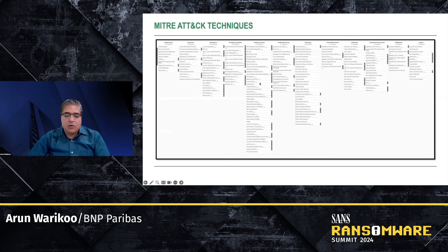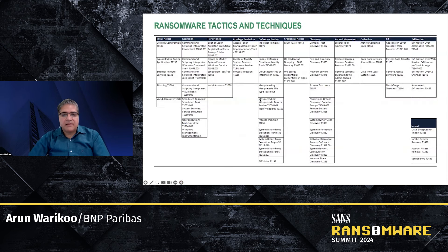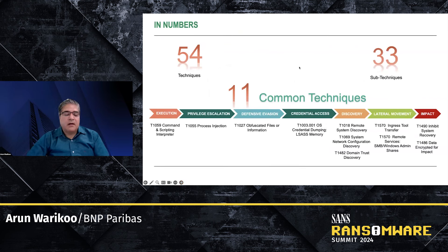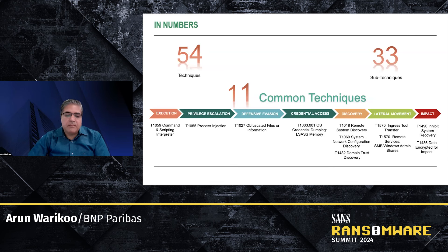Here is the whole list of MITRE ATT&CK techniques, but when I did my analysis based on those collection sources and reports, I found there is a subset of tactics and techniques essentially used by ransomware groups, which you are seeing right now on the screen. In numbers, there are 54 techniques in all leveraged by ransomware groups, 33 sub-techniques. What was interesting was there are 11 techniques commonly used by different ransomware groups, all the way from execution to impact. So there's a lot of overlap in terms of techniques leveraged by different ransomware groups. In my next section, I'm going to walk you through some of those techniques and how we can create hunt packages around them.